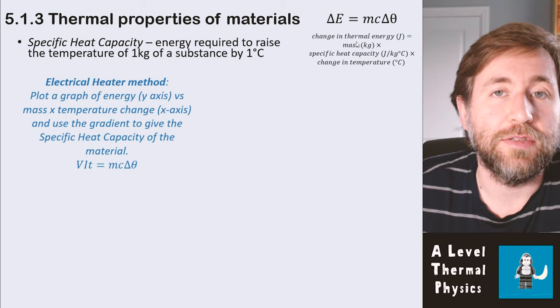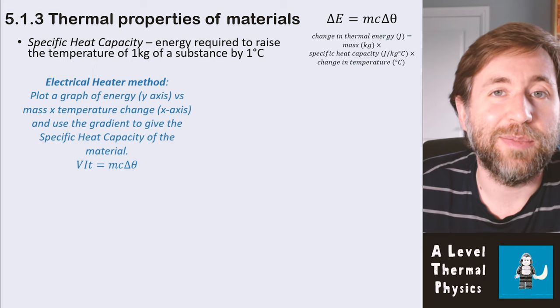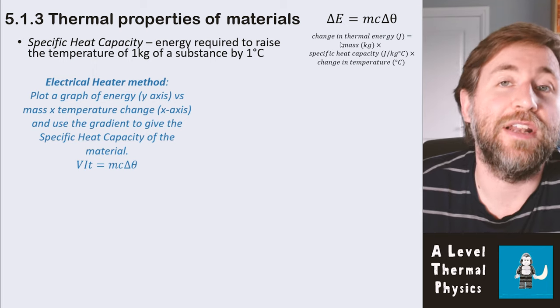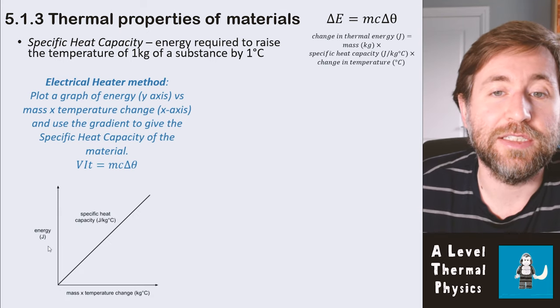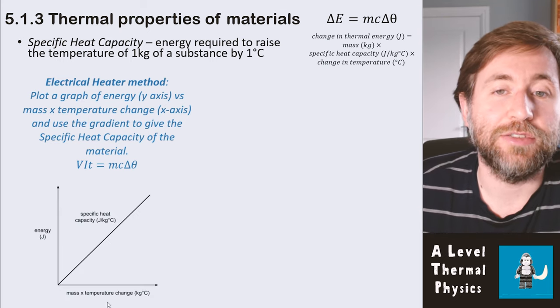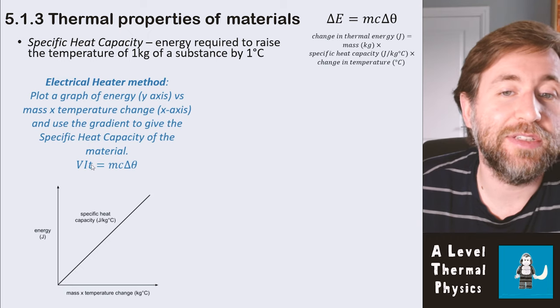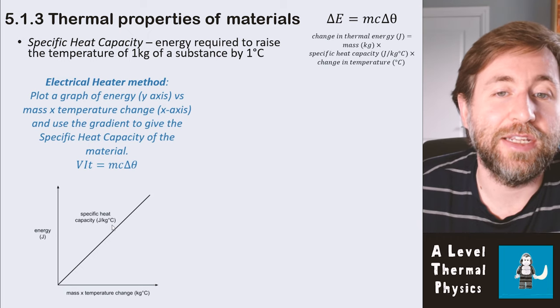There are two methods that you need to know to measure the specific heat capacity of a substance. The first is an electrical heater method. You basically are going to plot a graph of energy on the y-axis and mass times temperature change on the x-axis, so you get specific heat capacity as the gradient of the graph.